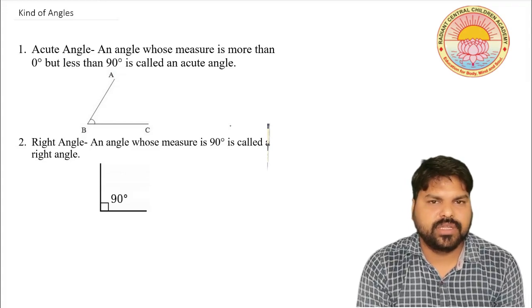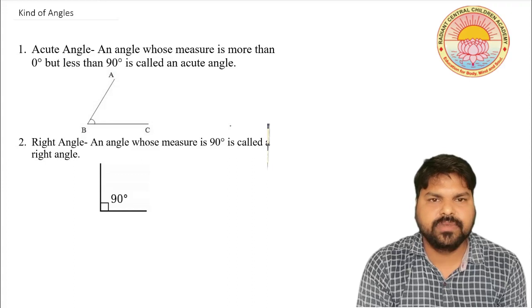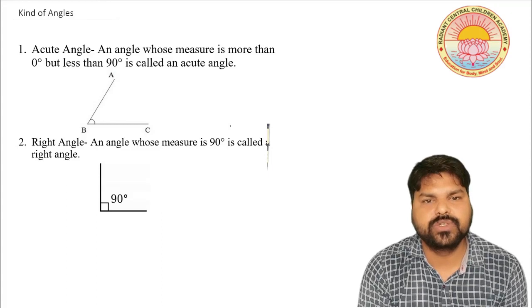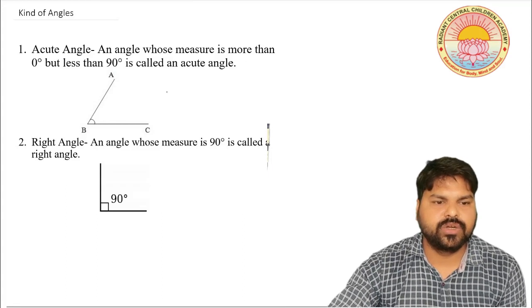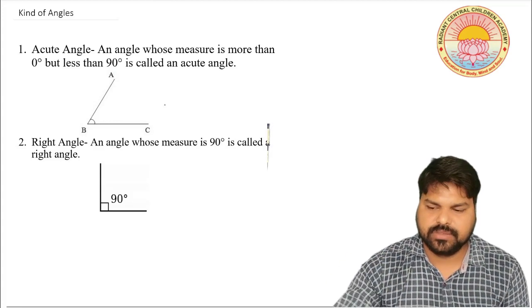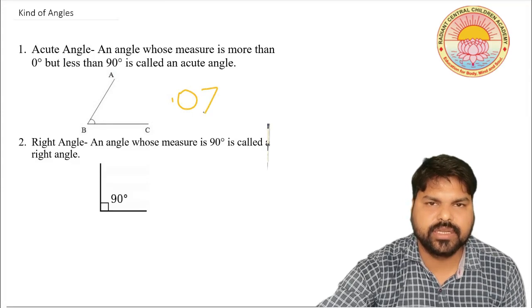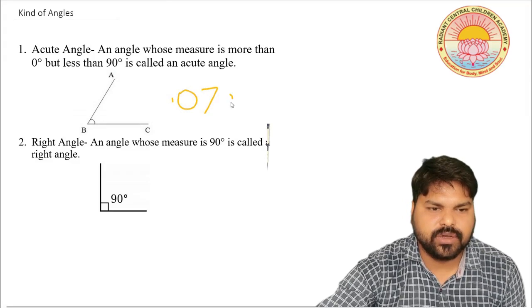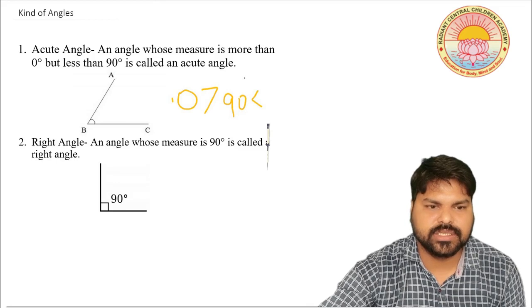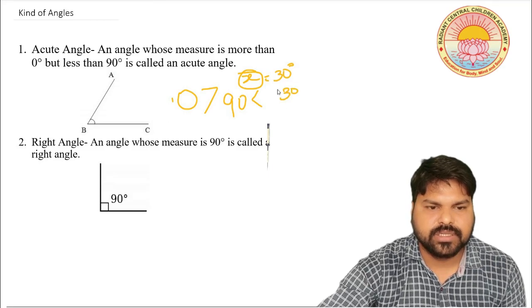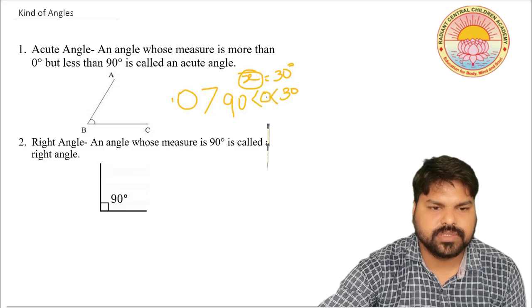First, what is an acute angle? An acute angle is an angle whose measure is more than 0 degrees but less than 90 degrees.